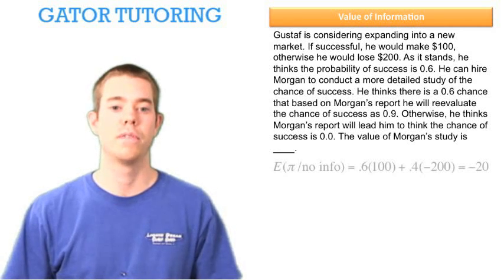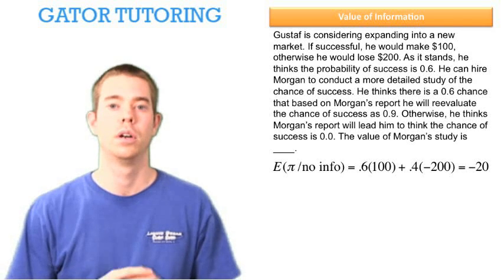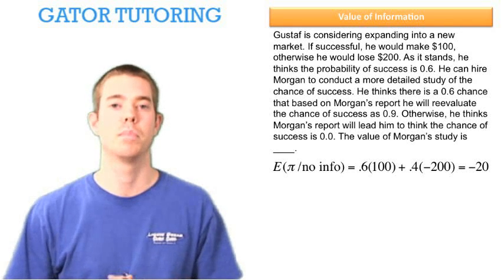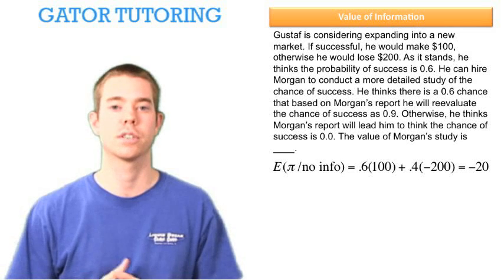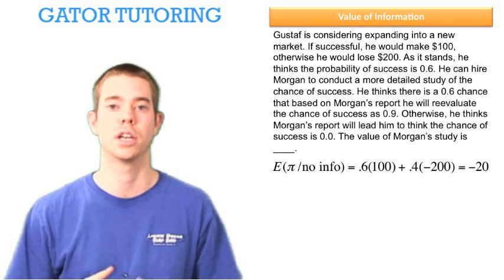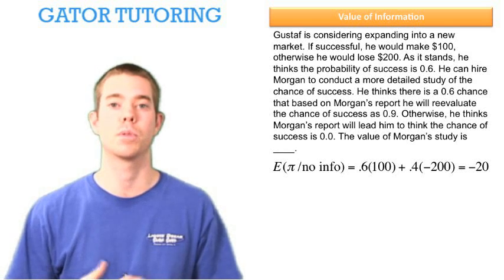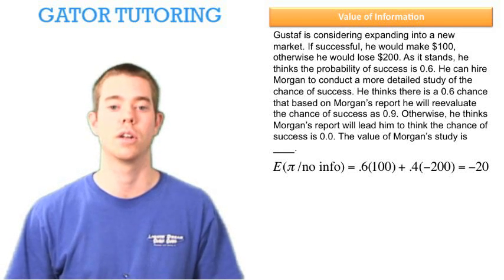The value of information is equal to the expected profit with information minus the expected profit without information. First, let's find the expected profit with no information. That's the 60% chance he thinks he'll succeed plus the 40% chance he thinks he'll fail, and we see that the expected value is negative $20.